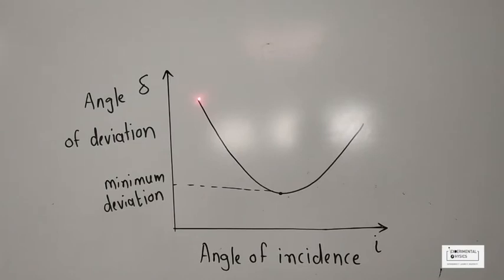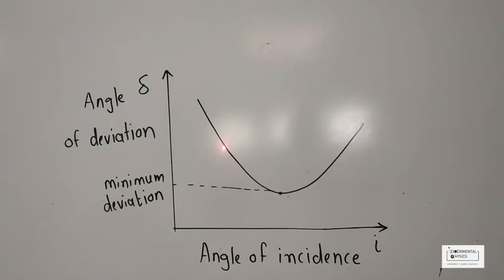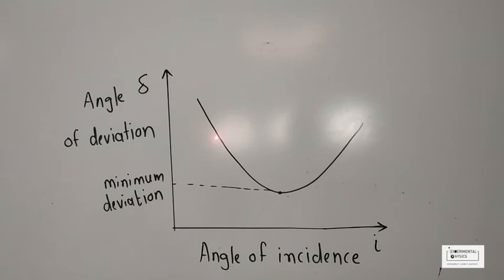Looking at the green laser, this is the point at which we are starting our graph. At this point the angle of incidence is the lowest — close to zero — but the angle of deviation has a maximum value. As I increase the angle of incidence, the angle of deviation decreases, and you could see in the demo that the refracted laser was shifting towards the right side to minimize the angle of deviation.